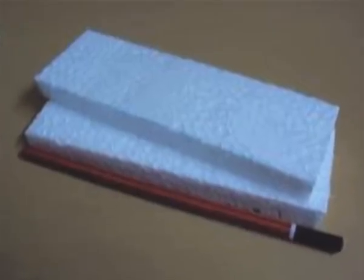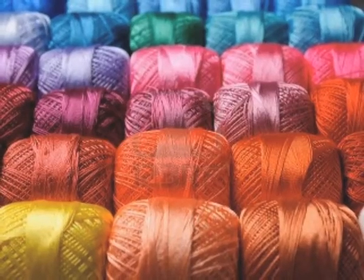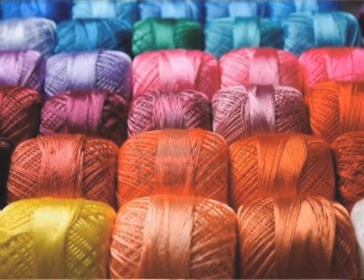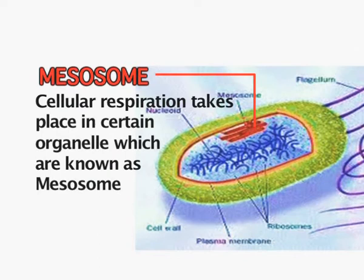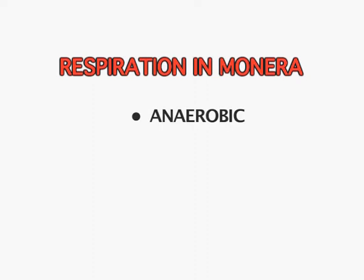You can do a little activity to consolidate your understanding: take a thermopole or cardboard and with the help of plasticine make a bacterial cell, using various threads of different colors and thickness to show the pili and the flagella. Since mitochondria are absent, how does cellular respiration take place in these prokaryotic organisms? Cellular respiration takes place in certain organelles known as mesosomes — internal extensions of the plasma membrane visible in the figure. The respiration is both anaerobic as well as aerobic.